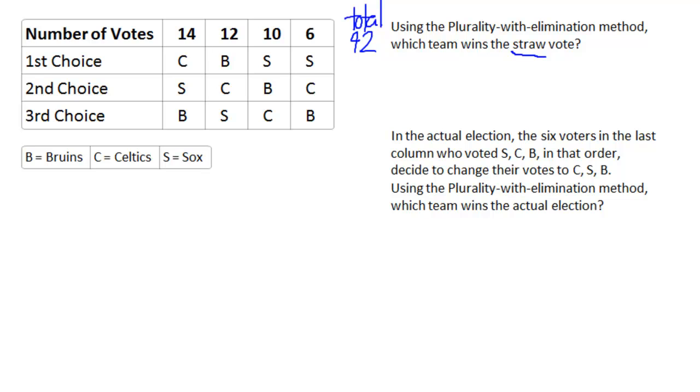And what are these people voting for? Well, they're voting to see which is their favorite Boston team. So we have the Bruins, B for Bruins, the Celtics, and the Sox. I figured I'd keep it simple and not include the Patriots or any other team for now.